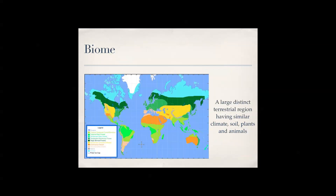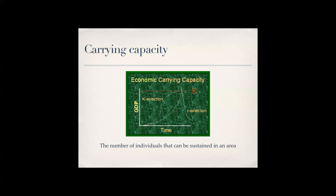A biome is a large, distinct terrestrial region having similar climate, soil, plants, and animals. Looking at the graph, you have the taiga, temperate deciduous forest which is most of America, subtropical desert, alpine tundra, oceans, and tropical rainforests. Remember that tropical rainforests are in Africa, and one key thing: their soil doesn't have a lot of nutrients because the life around them takes most of the nutrients from the soil.